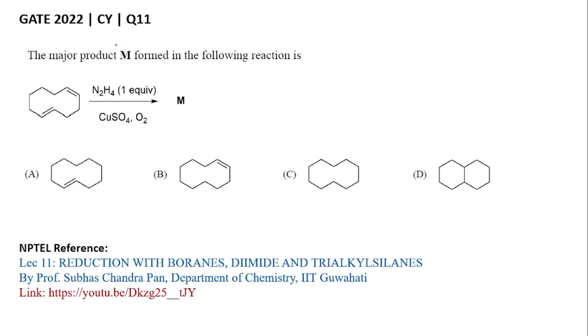Welcome to GATE Preparation. Today we will solve question number 11 from GATE 2022. The question is given as the major product M formed in the following reaction is. Here this cyclic 1,5-diene is treated with one equivalent of hydrazine in presence of copper sulfate and oxygen.